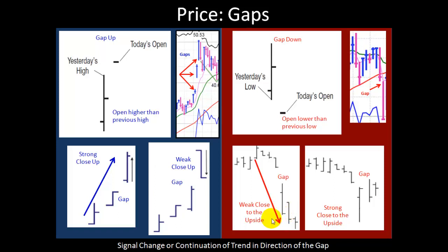You want to exercise extreme caution because it's very likely you'll experience continued weakness in the stock. However, when you have a gap down but a strong close to the upside — meaning in the upper 25% — it is possible that the stock can recover. You just want to make sure to keep a very close eye on your stock if it should gap down and monitor it for any additional weakness.